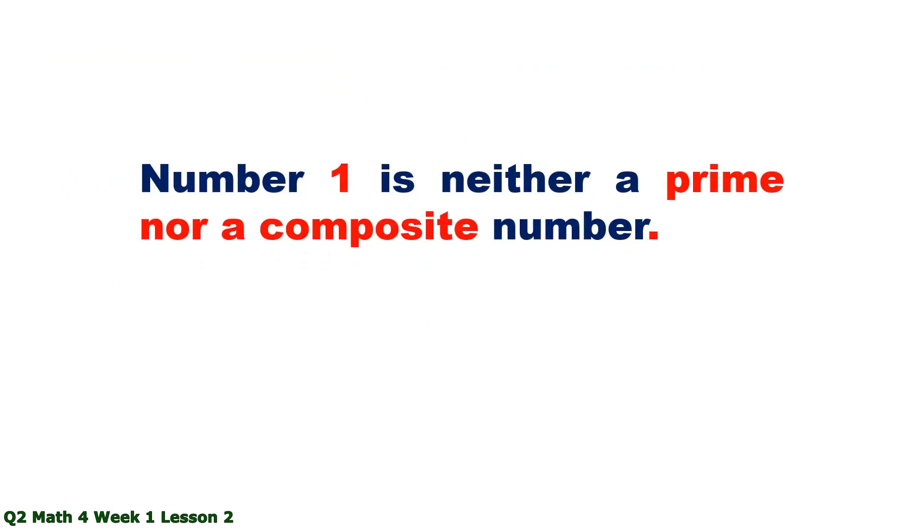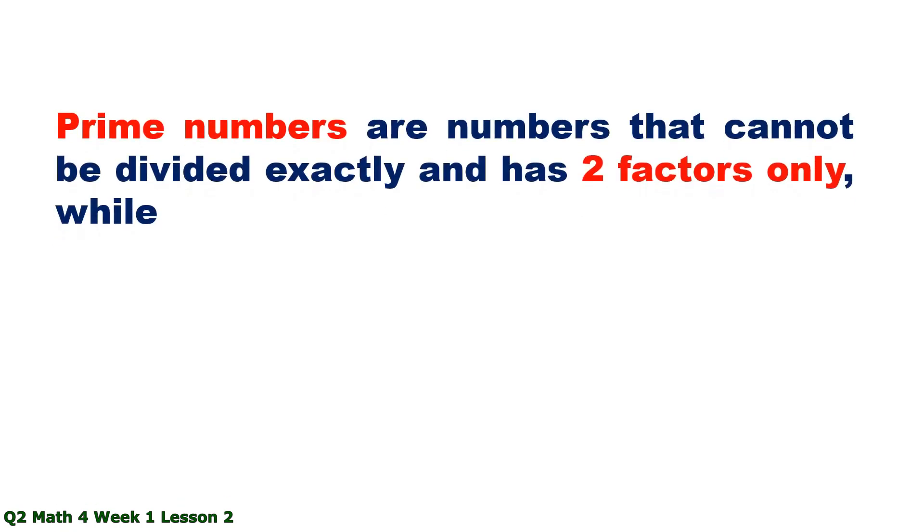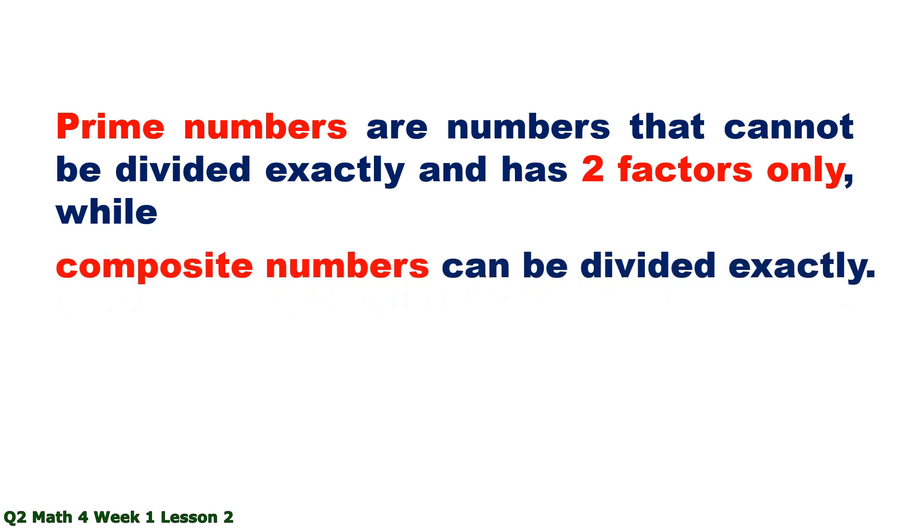Number 1 is neither a prime nor a composite number. 1 is a special number. Prime numbers are numbers that cannot be divided exactly and has two factors only, while composite numbers can be divided exactly. It has more than two factors.